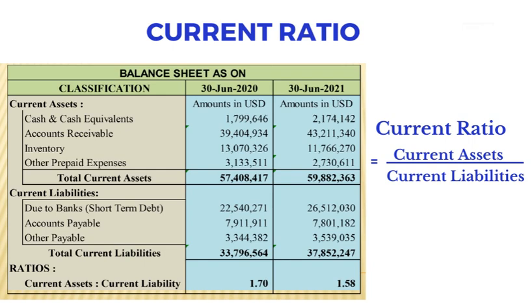Let us take two scenarios. As of 30th June 2020, we have US$57,408,417 worth of current assets divided by US$33,796,564 worth of current liabilities, giving us a current ratio of 1.70. On 30th June 2021, the current ratio measures the company's short-term liquidity position and provides a quantitative relationship between current assets and current liabilities.